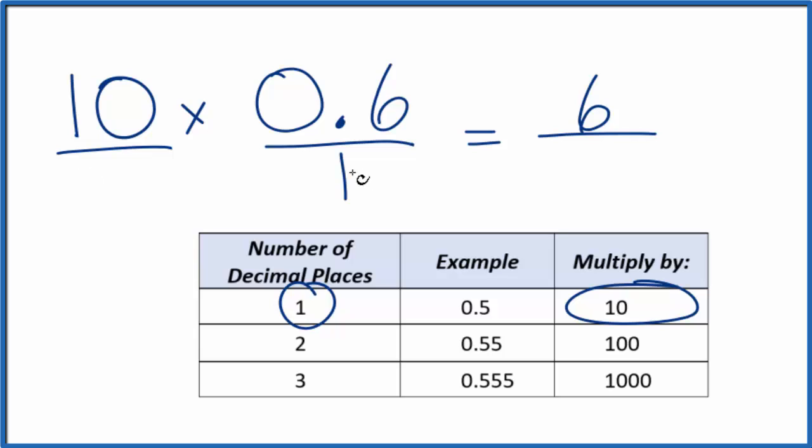We also have to multiply at the bottom here by 10. Think of it this way: 10 divided by 10 is just 1, so again, we're not changing the value, just the way it's written. 10 times 1 is 10.